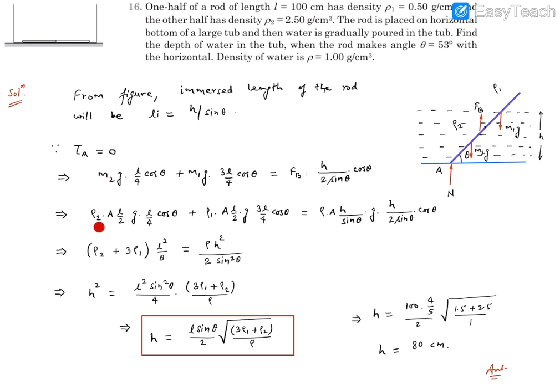Now m₂ could be written as ρ₂ into A into the length which is L by 2, times g. M₁ similarly could be written as ρ₁ into the volume which is A into L by 2, where A is the cross-sectional area.